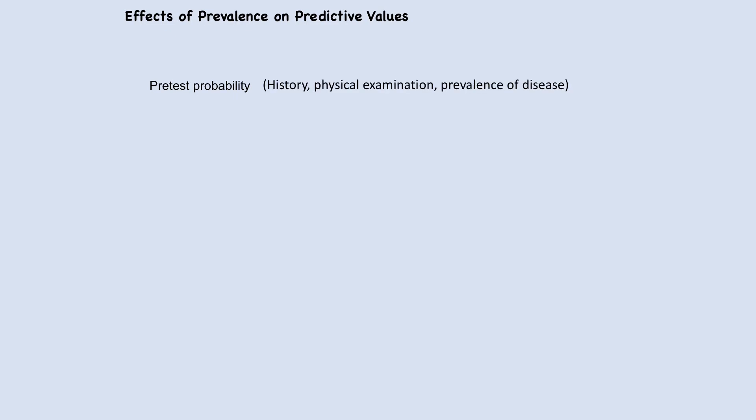In the process of diagnosis, first we estimate pretest probability — how likely a disease is present based on history, physical examination, prevalence of disease, and other relevant information. After this, we perform a diagnostic test and calculate post-test probability. There are two methods: one is by predictive values and the other is by likelihood ratios. Both are calculated based on sensitivity and specificity of the test.